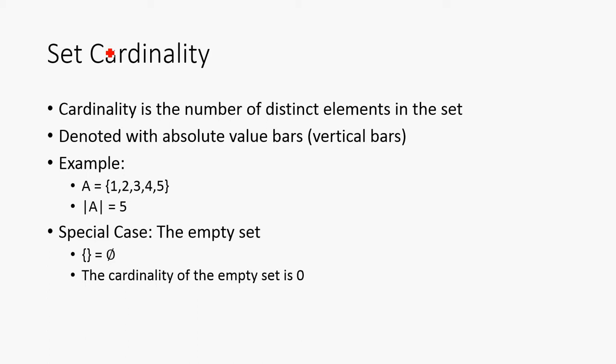So, next is set cardinality. Cardinality is the number of distinct elements in each set, and these are denoted typically with absolute value bars. So, let's take our set A again: {1,2,3,4,5}. Notice that there are 5 distinct elements in here. 1, 2, 3, 4, and 5. Thus, the cardinality is going to be 5.